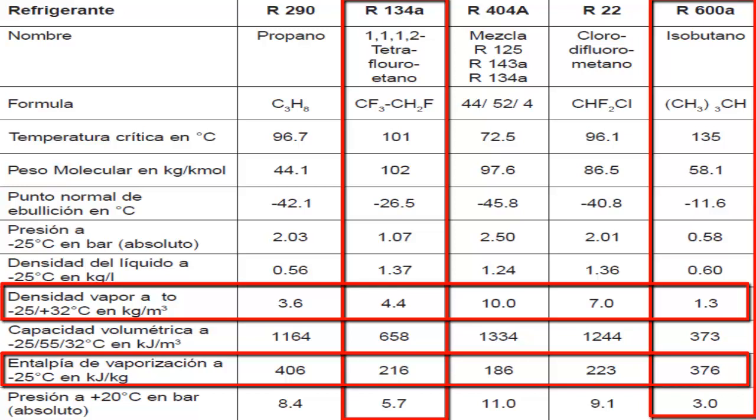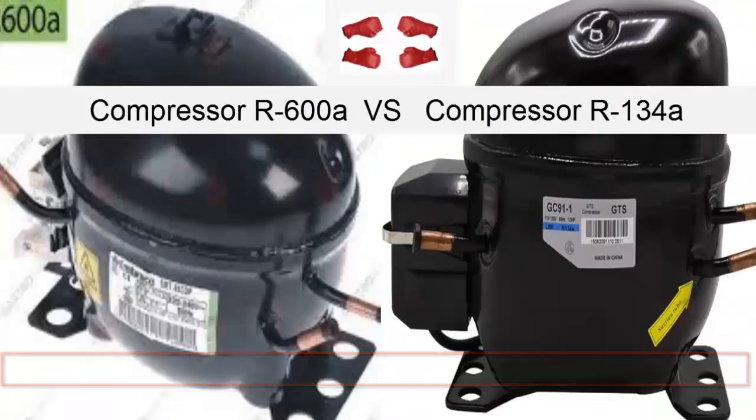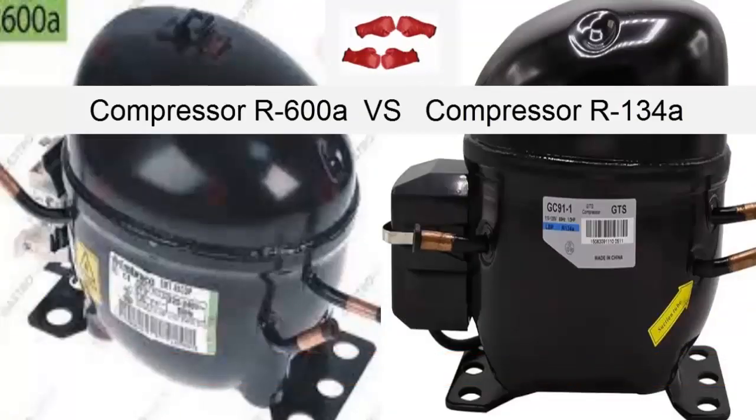A compressor using R600A handles fewer grams of gas compared to the R134A compressor, but each gram of R600A has a higher cooling capacity than a gram of R134A.